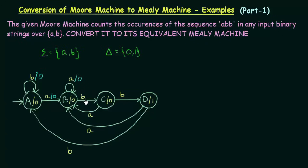This B is going to state C, and the output associated to C is also 0, so here we also get a 0. And this transition B is going to state D. The output associated to D is 1, so this B will have output 1 associated to it.